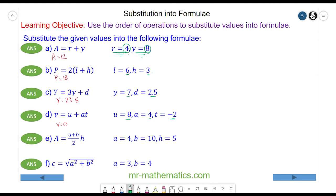With question e, we have A equals a plus b over 2 multiplied by h. We'll substitute in a as 4, b as 10, and h as 5.